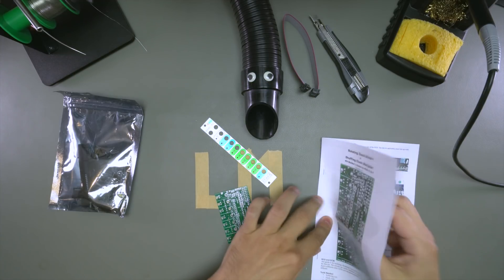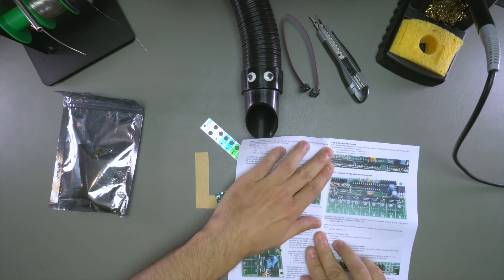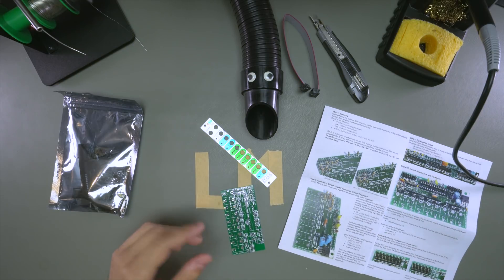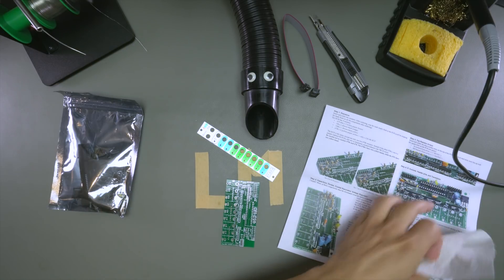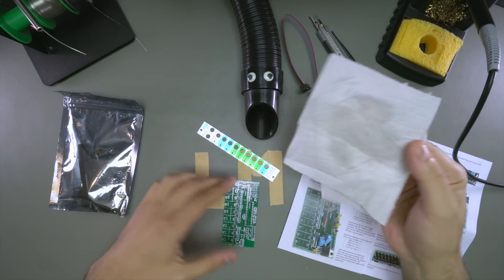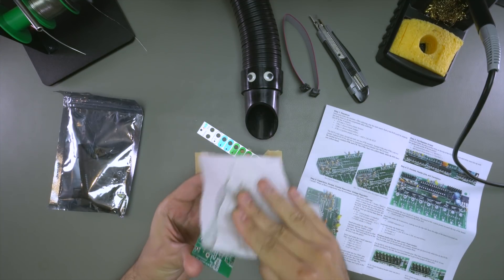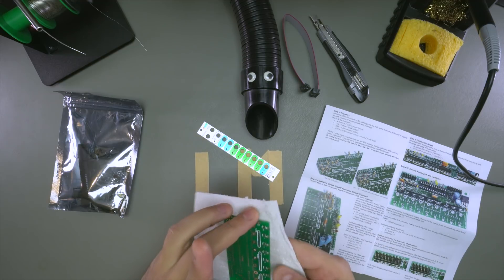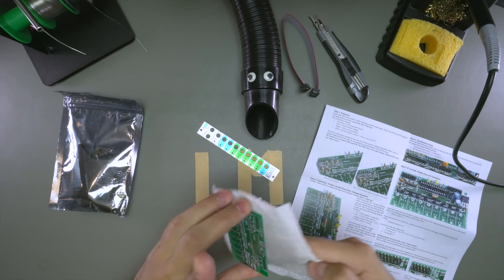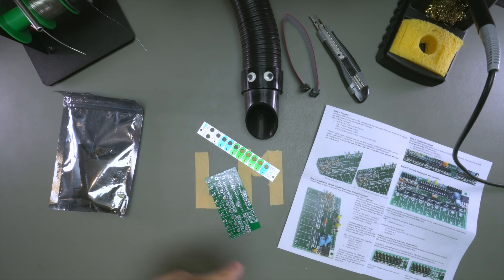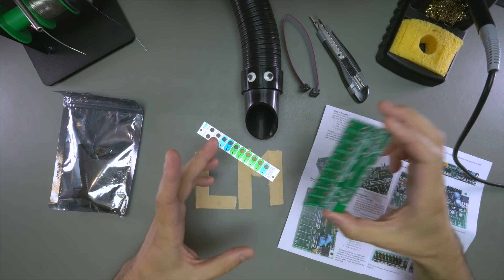So basically what we're gonna do is just follow the instructions as they have it here. One thing I should mention that I like to do before I start is actually take some isopropyl alcohol or IPA and just give this board a good wipe down. You never know where this board has been or somebody with greasy hands has touched it or something. You don't want that. It may prevent good, clean solder joints. So good practice if you happen to have some IPA.